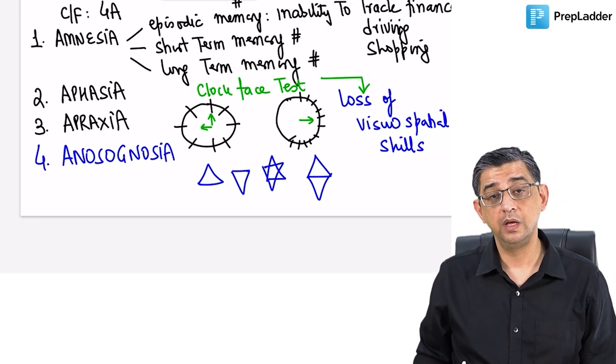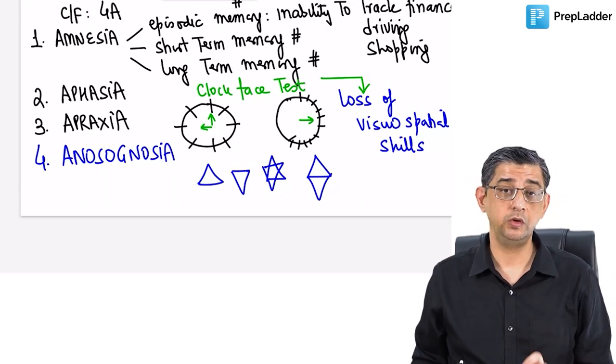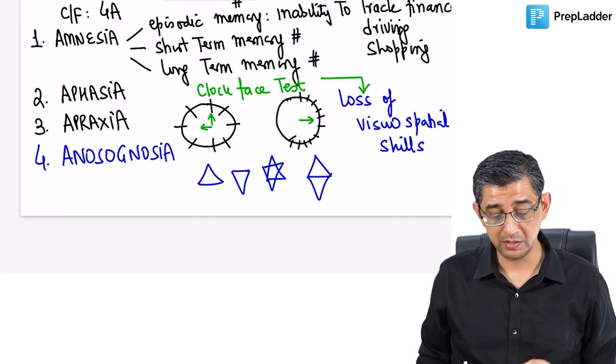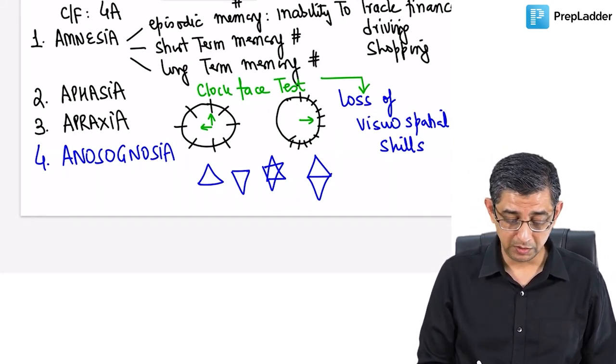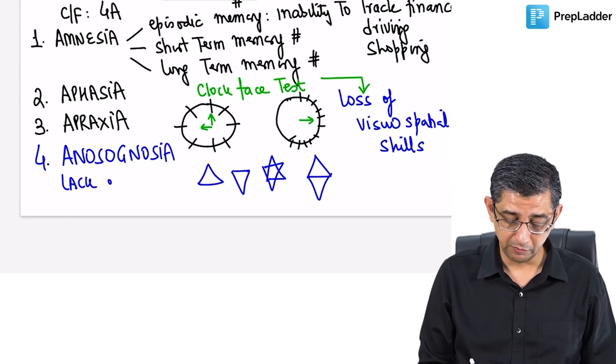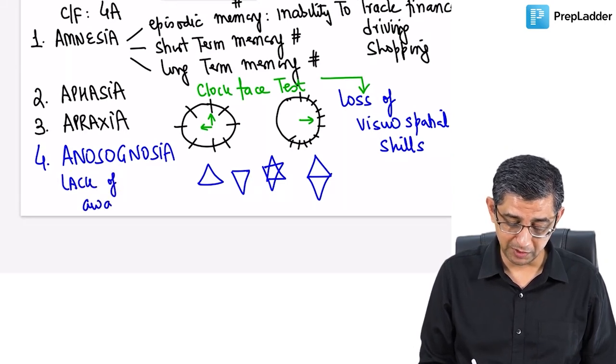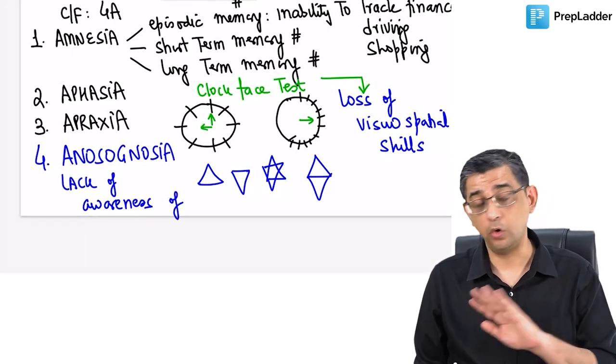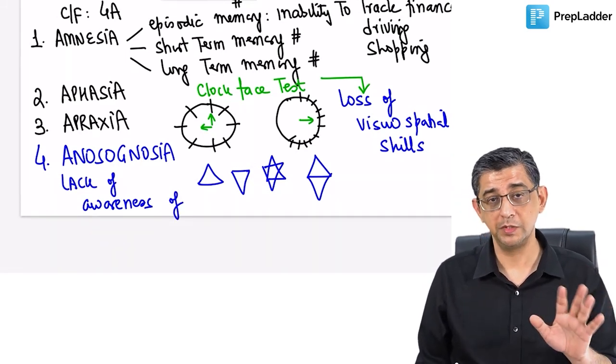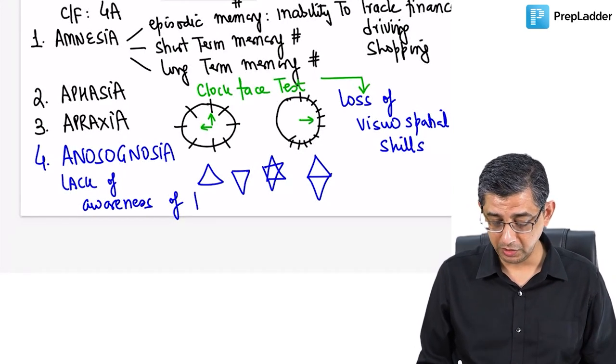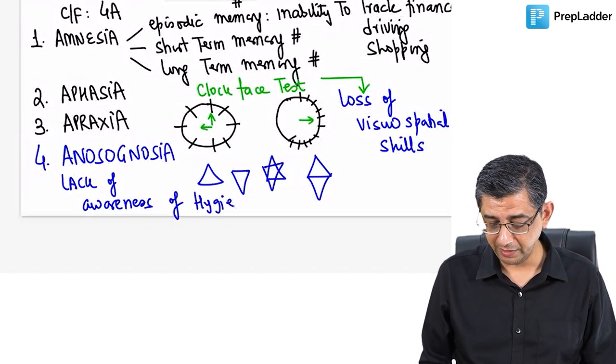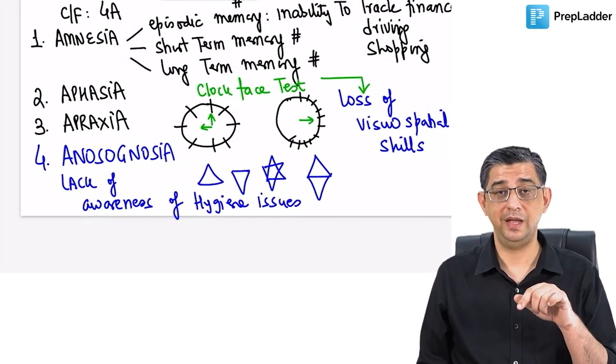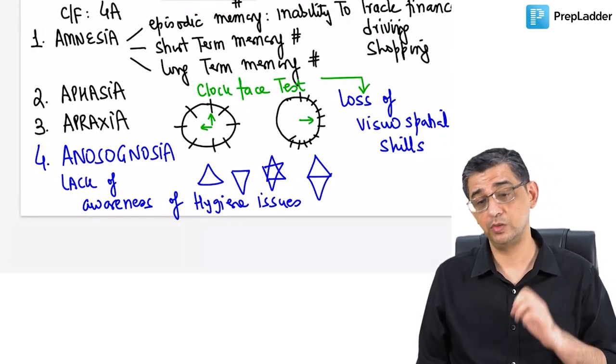Aphasia is a feature of dominant parietal lobe, apraxia is non-dominant parietal lobe identified with clock phase test, and agnosia basically means there is lack of awareness with respect to hygiene issues in these patients. There is lack of awareness to almost everything. It's not that he's in altered sensorium - sensorium is fine - but there is lack of awareness, especially of hygiene issues.